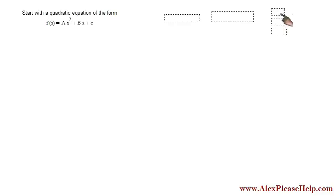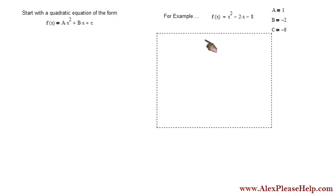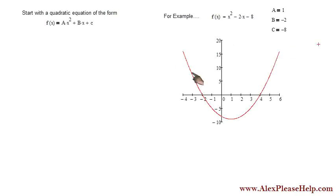One example could be f of x equals x squared minus 2x minus 8, where a equals 1, b equals negative 2, c equals negative 8. See what this looks like. I have a graph here. Parabola crosses the axis at two locations.